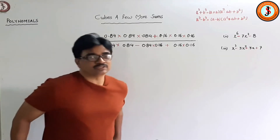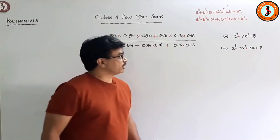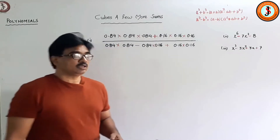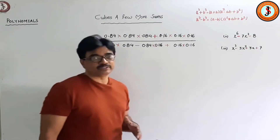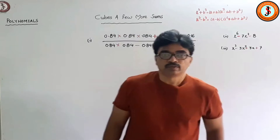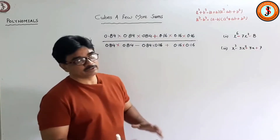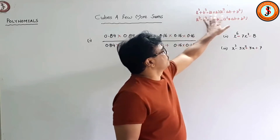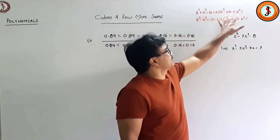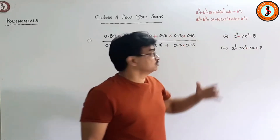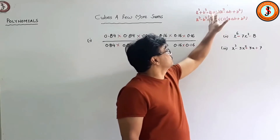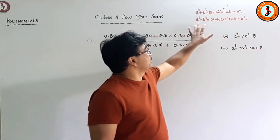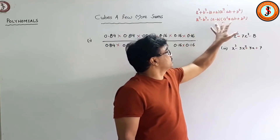Hello students, welcome. This is Sanjay Joseph and we are dealing with the chapter Polynomials. In polynomials we have come up to cubes and we have learned the formula: sum of cubes. The expansion for factorization is a³ + b³ = (a + b)(a² - ab + b²) and a³ - b³ = (a - b)(a² + ab + b²).